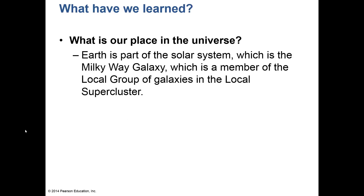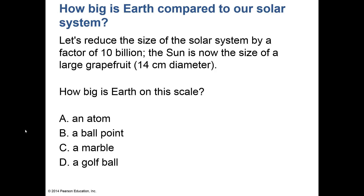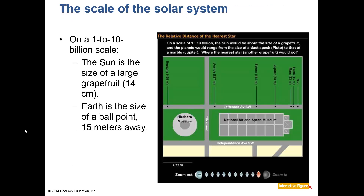What is our place in the universe? The earth is part of the solar system, which is in the Milky Way galaxy, which is a member of a local group of 24 galaxies, and the local supercluster with millions of galaxies. On a scale of 1 to 10 billion, the Sun would be the size of a large grapefruit, and the Earth would be the size of a ballpoint pen 15 meters away.